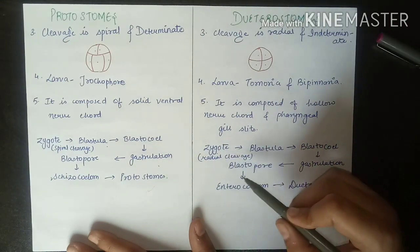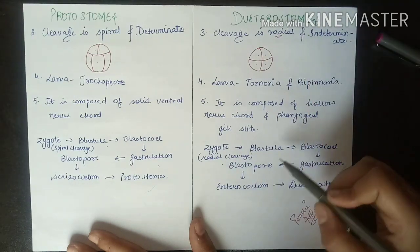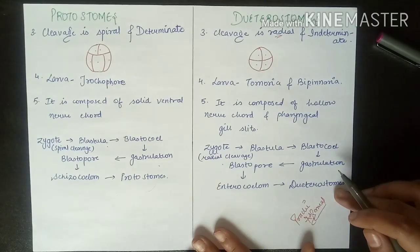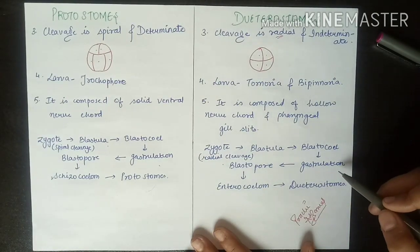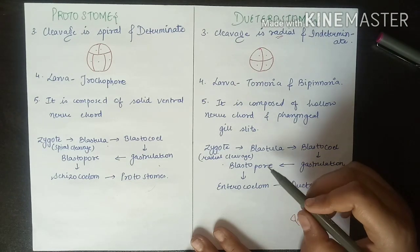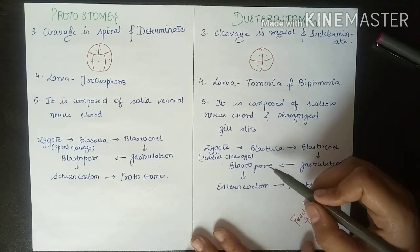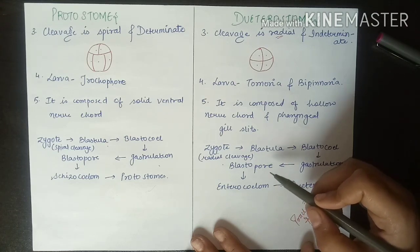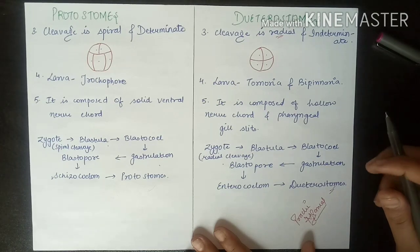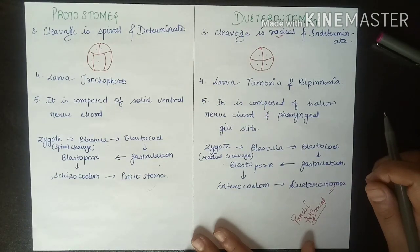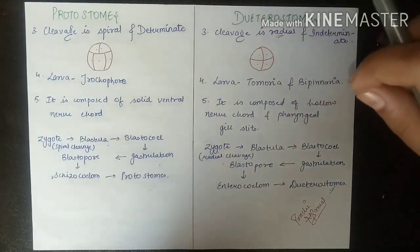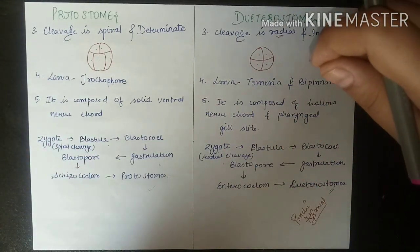For deuterostomes: the zygote undergoes radial cleavage, then a blastula is formed, followed by a blastocoel, then gastrulation, then blastopore formation — here the blastopore becomes the anus. Then the enterocoelom is formed, and finally the deuterostome is formed. I hope the difference between protostomes and deuterostomes is now clear.